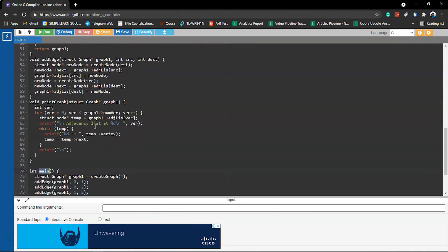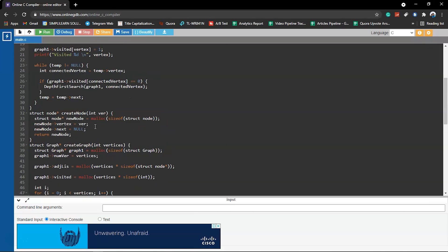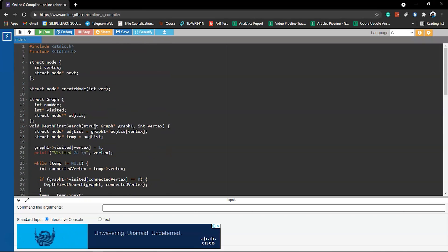Now don't worry about the code. This code segment will be added in the description box below, and you can have access to it and try to run it on your local system and have a better learning experience. Now without further ado, let's try to run this program and get the output and see how the DFS algorithm gets implemented and traverses through the graph.